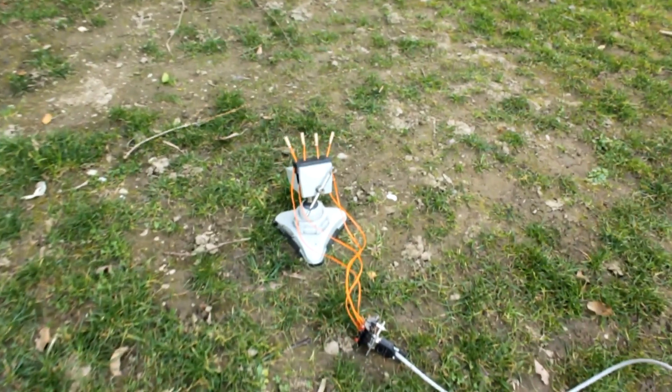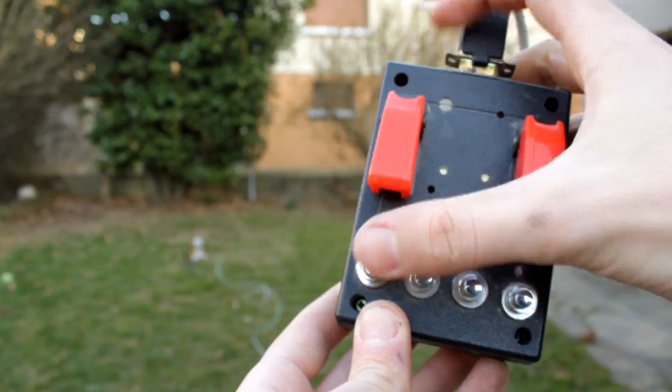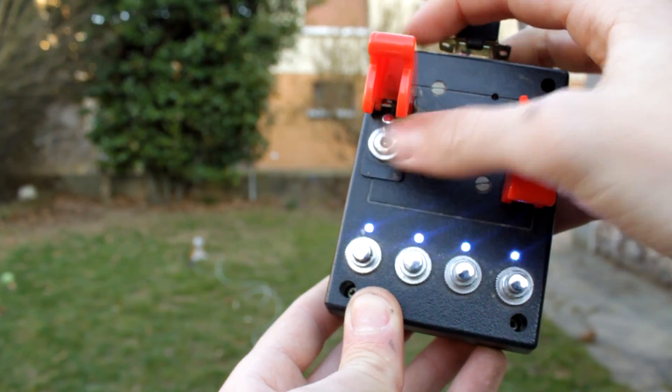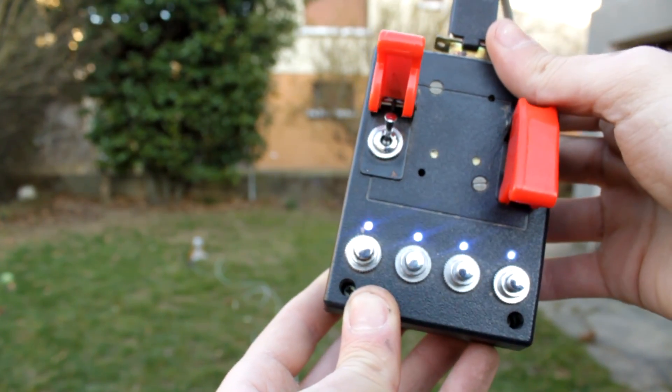First let me show you what it actually does. This is the on-off switch. When the safety cover is pushed up and the switch is flicked, this little light flashes.